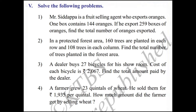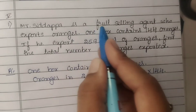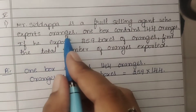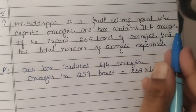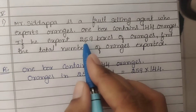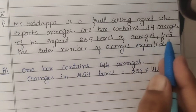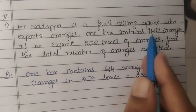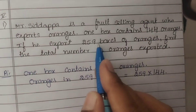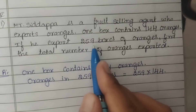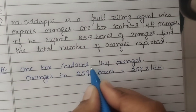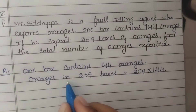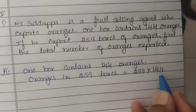Let's go to the 5th Main: solve the following problems. First question: Mr. Sidhappa is a fruit selling agent who exports oranges. 1 box contains 144 oranges. If he exports 259 boxes of oranges, find the total number of oranges exported. Oranges in 259 boxes is equal to 259 into 144.